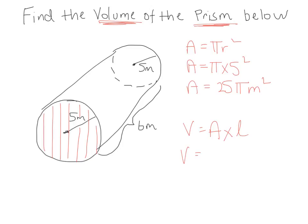The volume is the area of the end times by the length back. 25π times 6 meters back. 25 times 6 is 150. So 150π meters cubed equals 471.24 meters cubed.